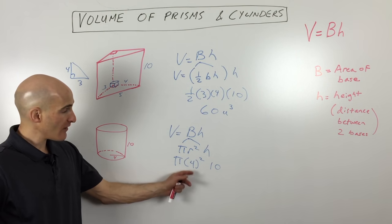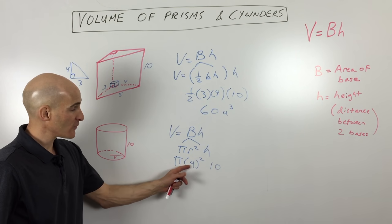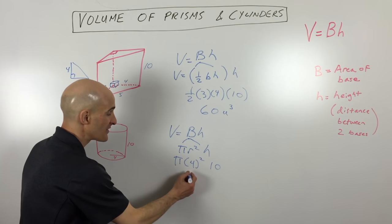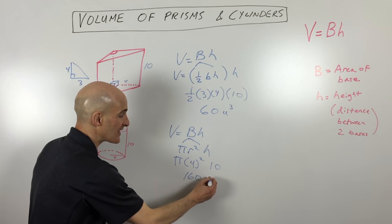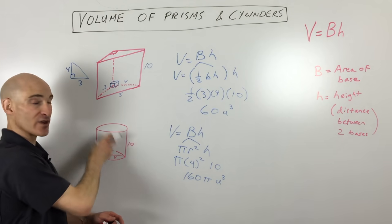Remember, you want to do the order of operations: parentheses, exponents, multiplication. So 4 squared is 16, times 10 is 160. We'll just leave pi as pi, so that'll give us an exact answer: 160π units cubed.